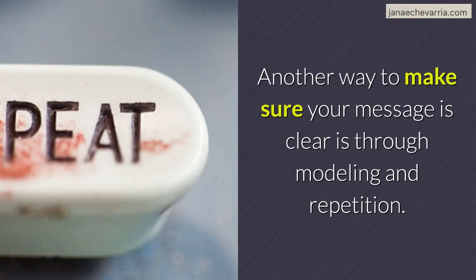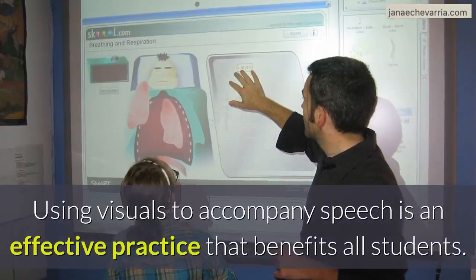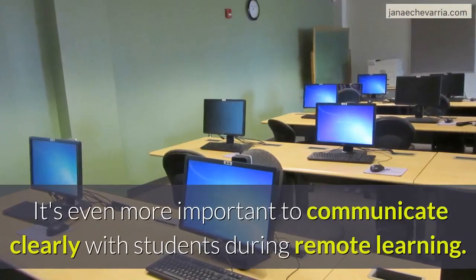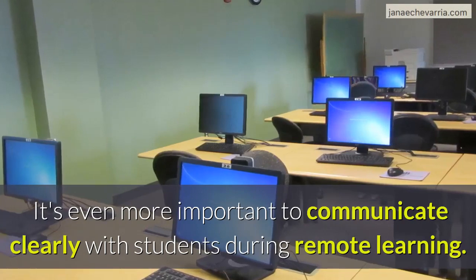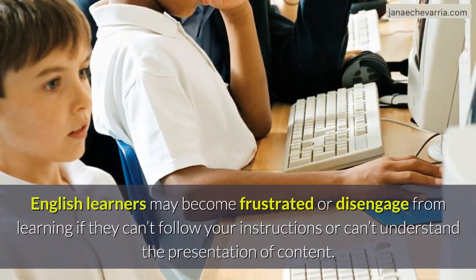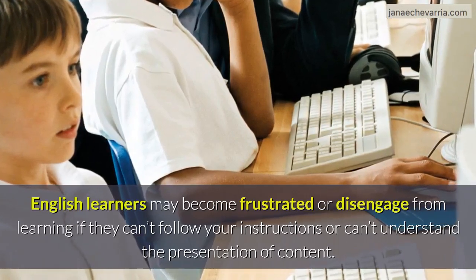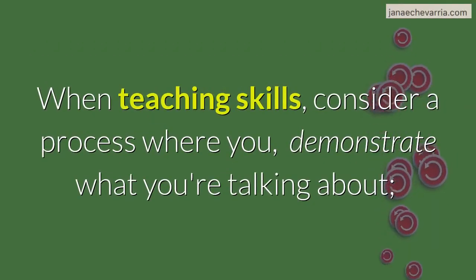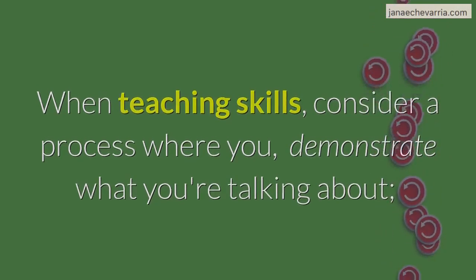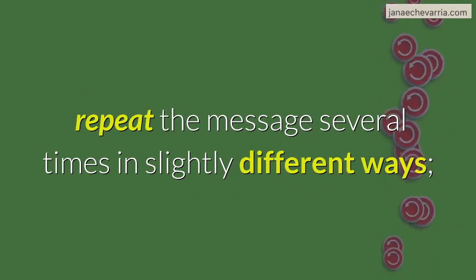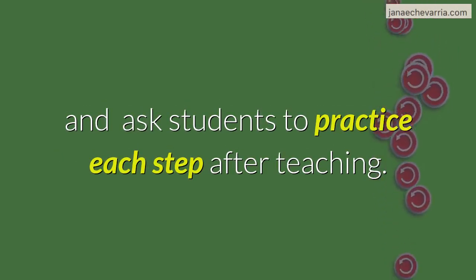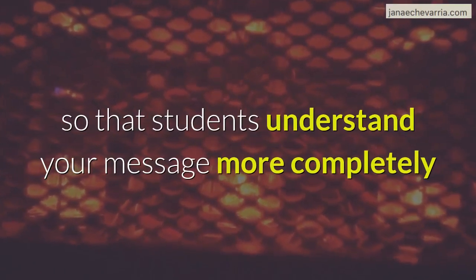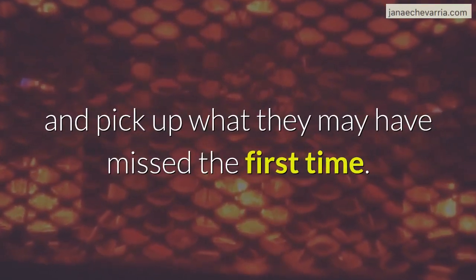Another way to make sure your message is clear is through modeling and repetition. Using visuals to accompany speech is an effective practice that benefits all students. It's even more important to communicate clearly with students during remote learning, as English learners may become frustrated or disengaged if they can't follow your instructions or understand the content. When teaching skills, consider a process where you demonstrate what you're talking about, repeat the message several times in slightly different ways, and ask students to practice each step after teaching. Clearly spoken, recorded messages can be replayed so that students understand your message more completely and pick up what they may have missed the first time.